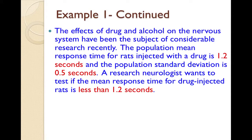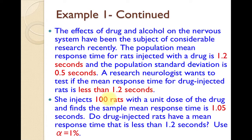Now let's take that problem and do a complete hypothesis test. We're given that the mean is 1.2 seconds, the population standard deviation is 0.5 seconds, and we're looking to counterclaim that the mean is less than 1.2 seconds. She injects 100 rats with a unit dose of the drug and finds the sample mean x̄ is 1.05. Do drug-injected rats have a mean response time less than 1.2 seconds? We're supposed to use an alpha of 1%. Let's take this hypothesis test from beginning to end.